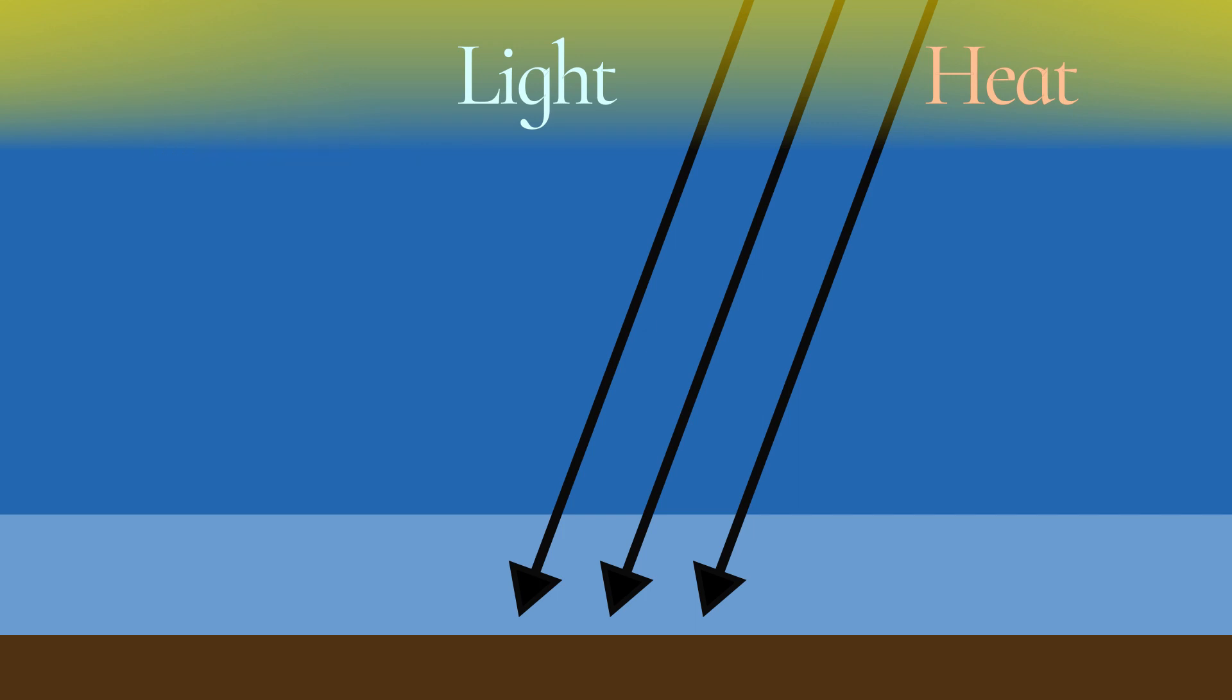So the dirt absorbs that heat, transfers that into the ice, and causes the ice to melt more, which exposes more dirt, which causes the ice to melt, etc.